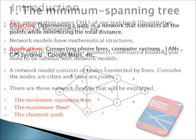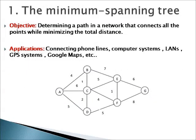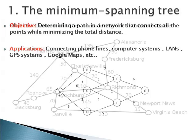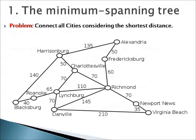The first model is called the Minimum Spanning Tree. The objective of this method is to determine the path that connects all nodes using the minimum distance. Applications include connecting phone lines, computer LANs, and so on. Let's try to solve a problem here.